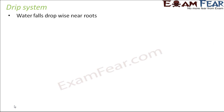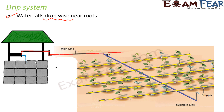Now let us look at the second system — the drip system. Instead of water sprinkling out, drops of water are provided near the roots. It aims to save even more water, so the drip system is more efficient for areas with very limited water supply. Water falls drop-wise near the roots, which is why it is called the drip system. From the well, water comes to the main line, then to a sub main line, and from there to perpendicular pipelines.